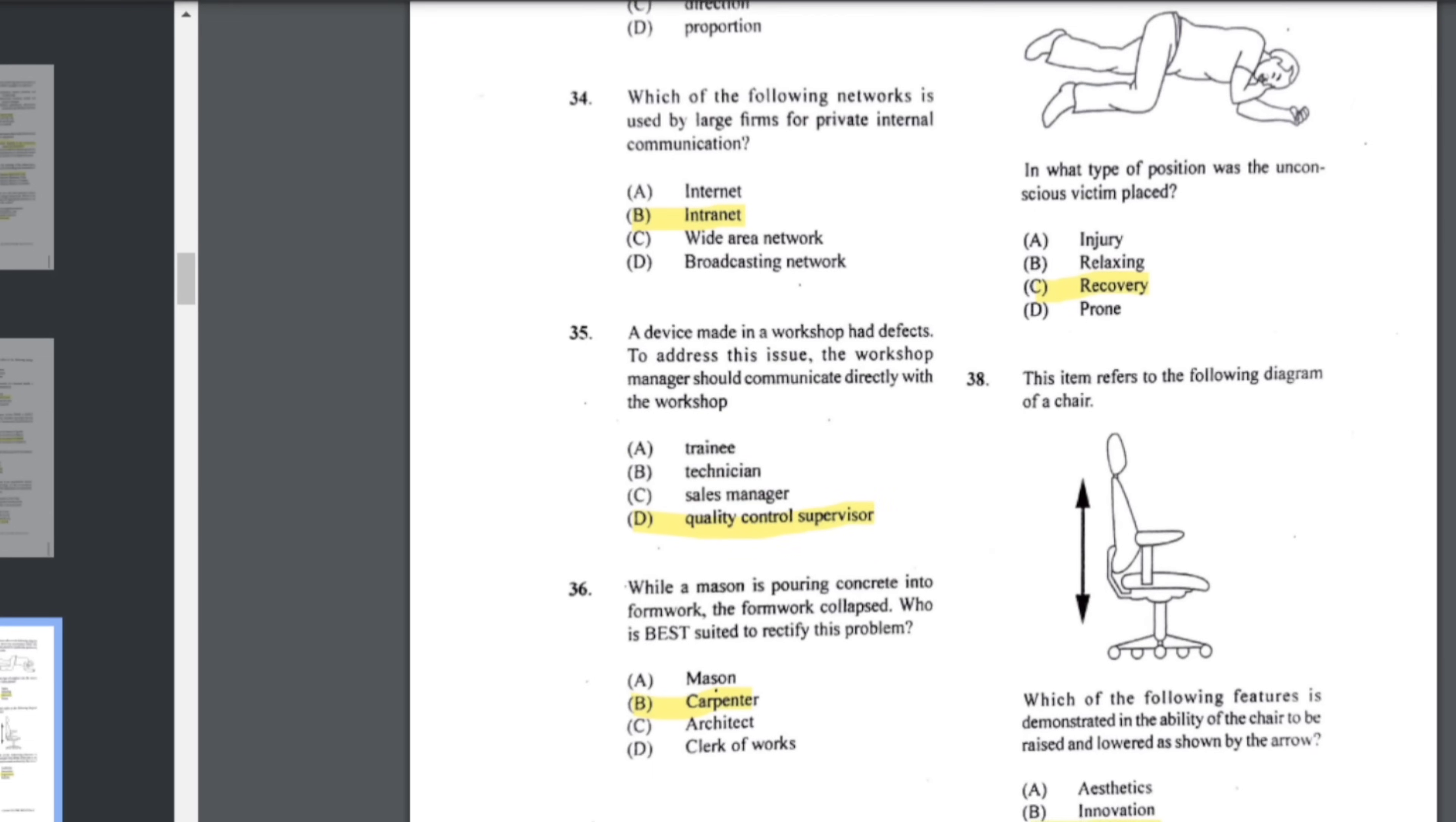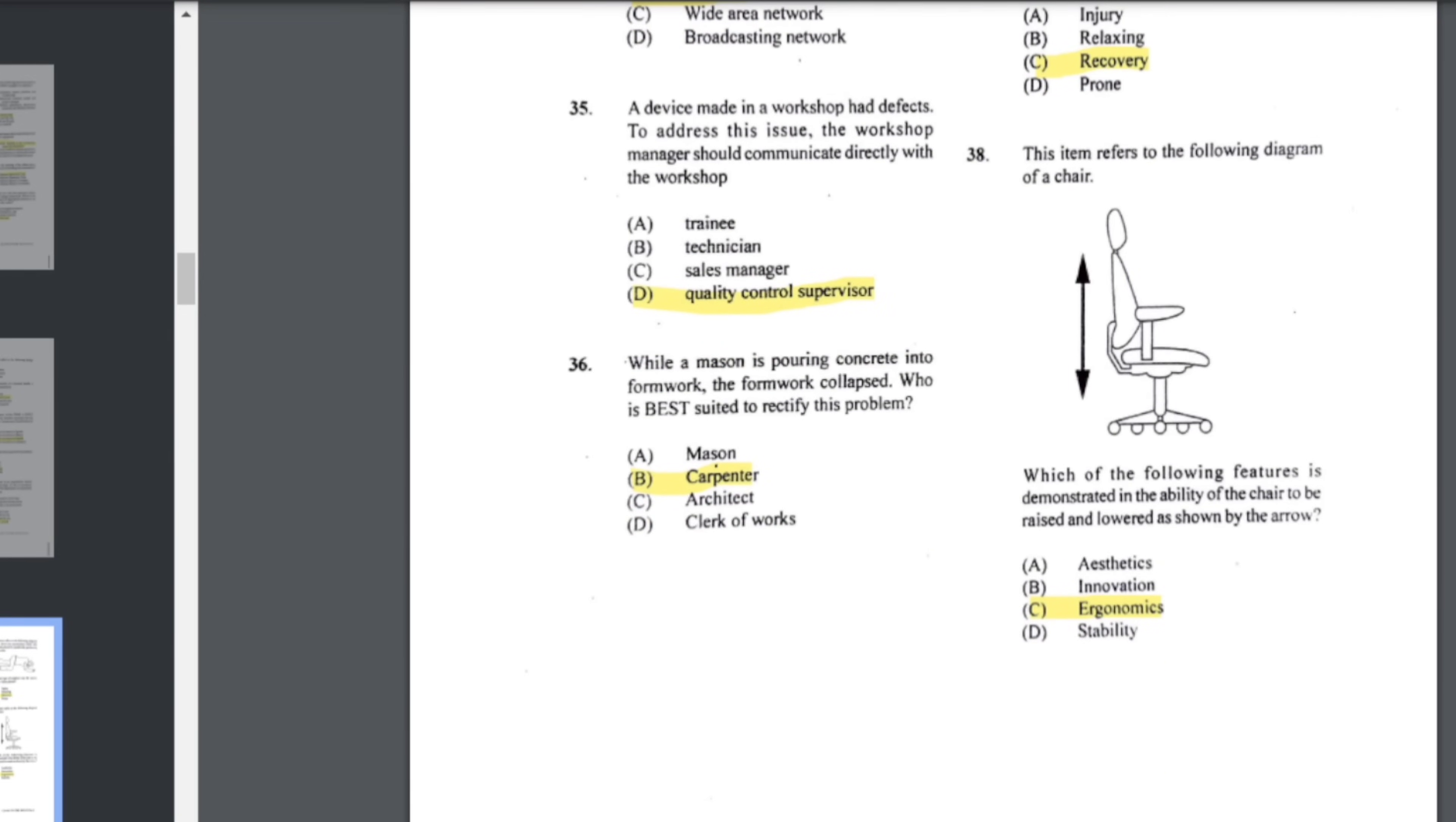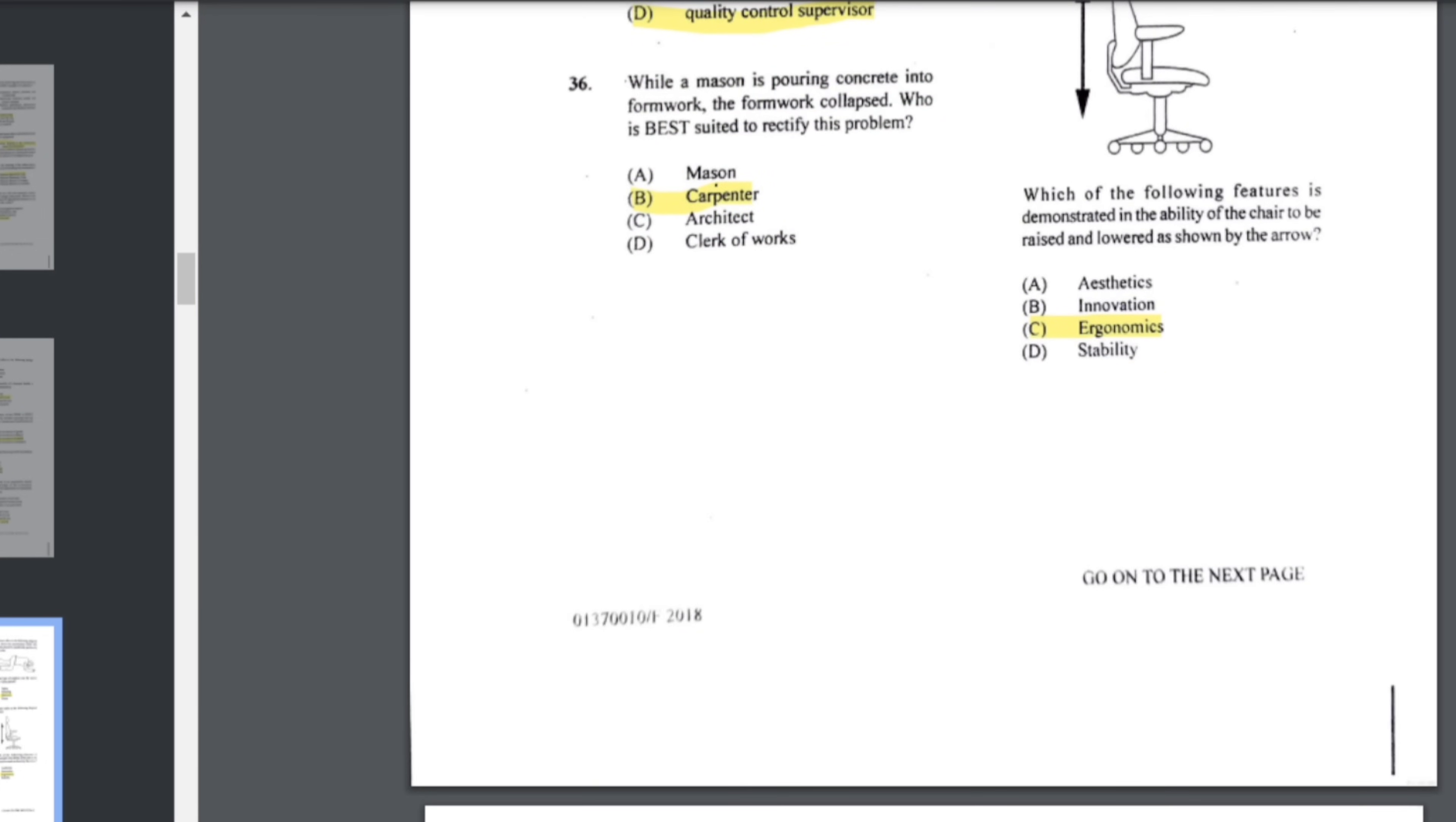Number 30: which aspect of the CSME is most supported by member nationals having Caribbean Vocational Qualifications or CVQs and the free movement of capital? Number 31: which of the following is not an attribute of color? This one is shape. Number 32: all personnel in an organization should have knowledge of the evacuation procedure. The organization is responsible for providing evacuation routes, designated muster points, regular evacuation drills - all of the above. Number 33: in product design, form refers to shape. Number 34: which of the following networks is used by large firms for private internal communication? That would be an intranet because it's internal.